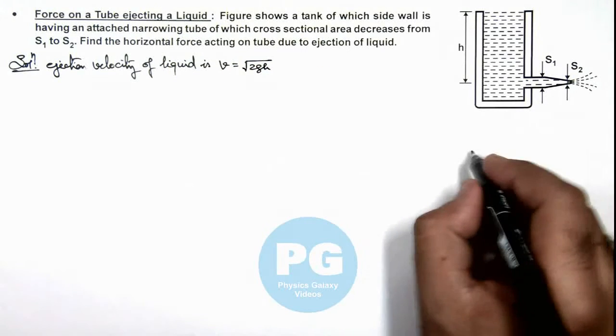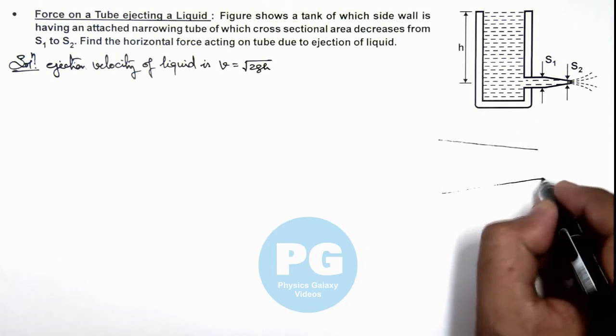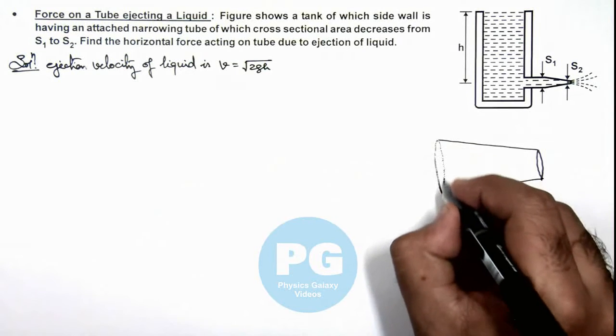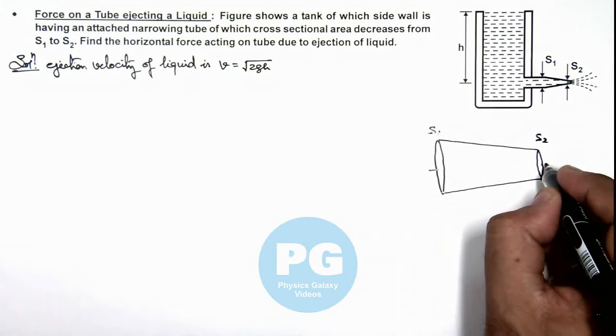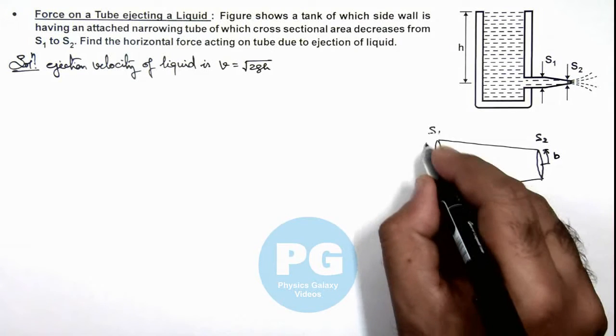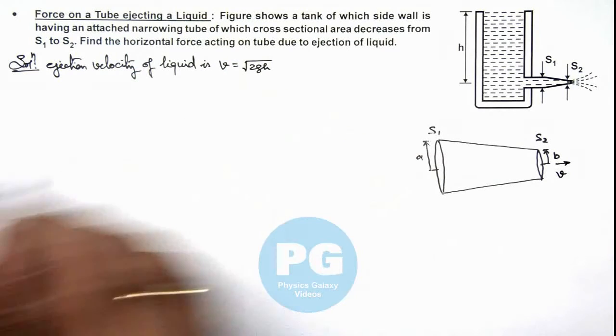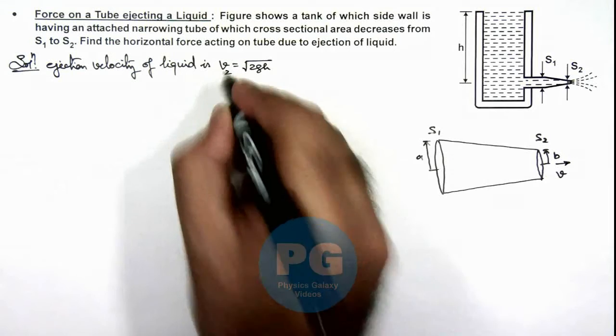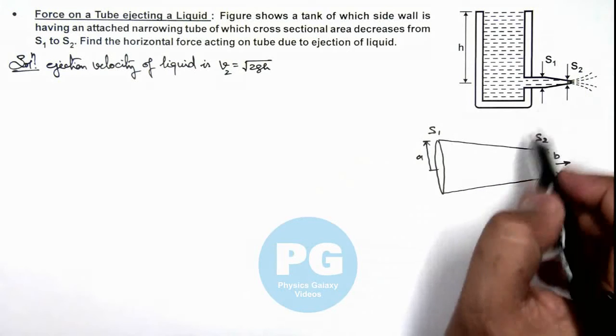And if we talk about this tube, we can redraw the enlarged view of this tube where we can consider if this cross sectional area is S₁, this is S₂. Here the radius is b, and here we consider radius to be a. And liquid is coming out with the velocity v which is given as √(2gh), and this can be written as v₂, which is coming out from the cross sectional area S₂.